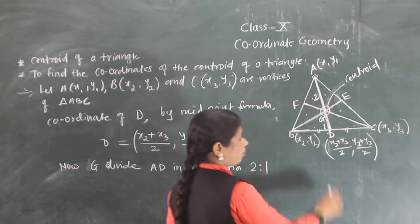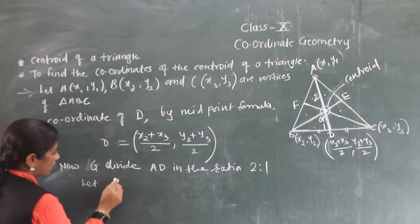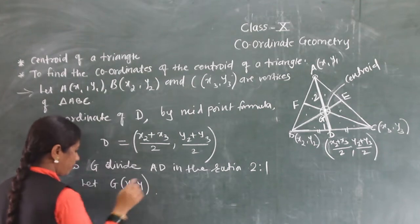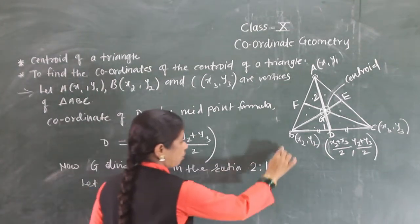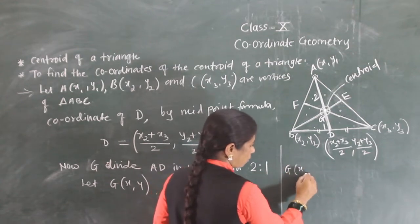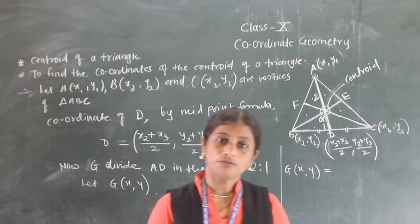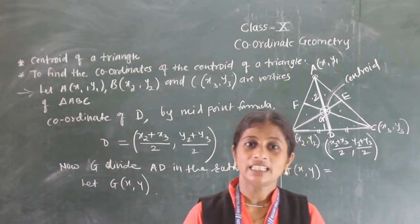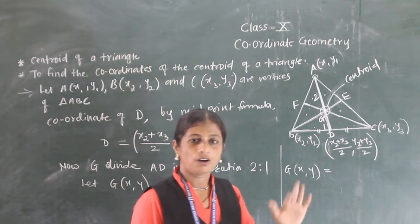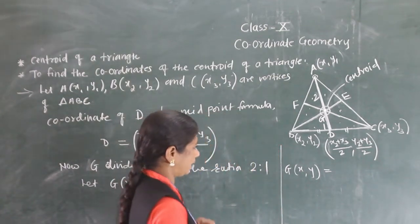Let G be (x, y). To find the coordinates of G, which formula will we use? Section formula. The section formula gives: M·x2 + N·x1 upon M + N, comma M·y2 + N·y1 upon M + N.